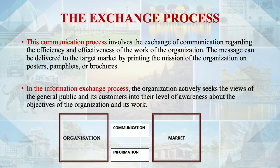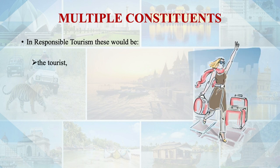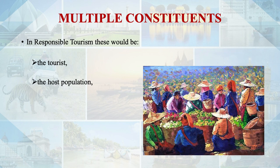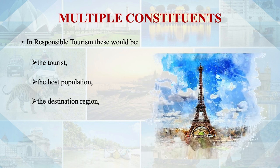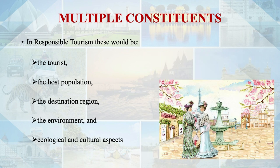In the information exchange process, the organization actively seeks the views of the general public and its customers regarding their level of awareness about the objectives and work of the organization. The third element is multiple constituents. In responsible tourism, these would be the tourist, the host population, the destination or region, the environment, and ecological and cultural aspects.